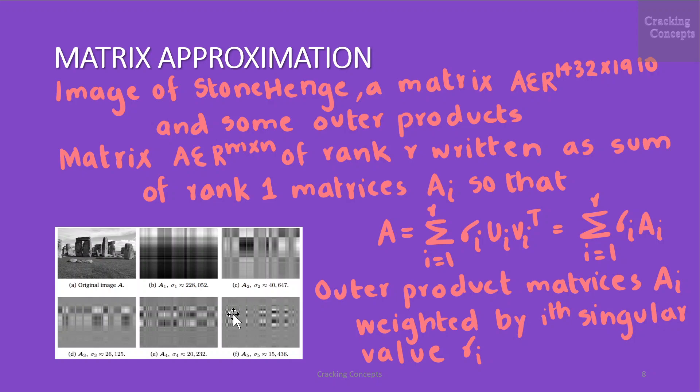A matrix A belonging to m x n dimension space of rank R can be written as the sum of rank one matrices A_i so that A is given by Σ_{i=1}^{R} σ_i u_i v_i^T which can be written as Σ_{i=1}^{R} σ_i A_i where the outer product matrices A_i are weighted by the ith singular value σ_i.